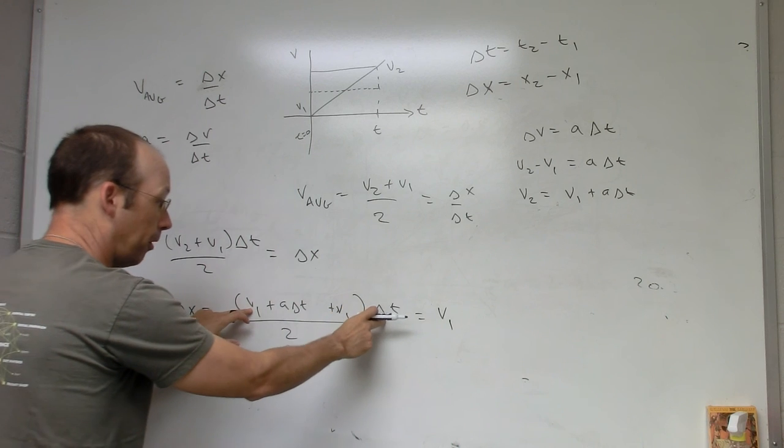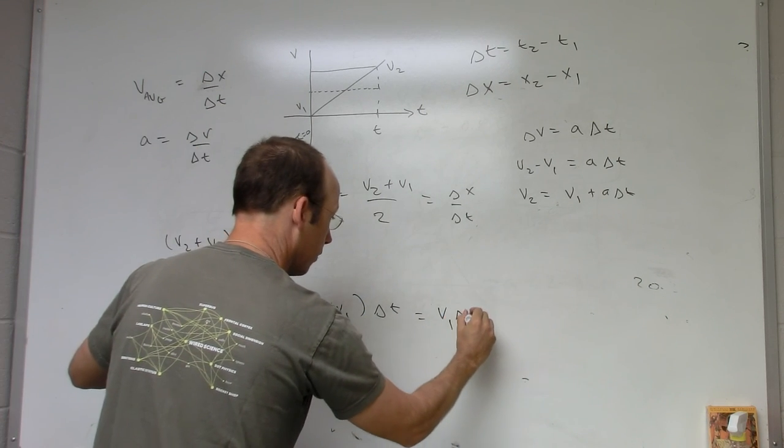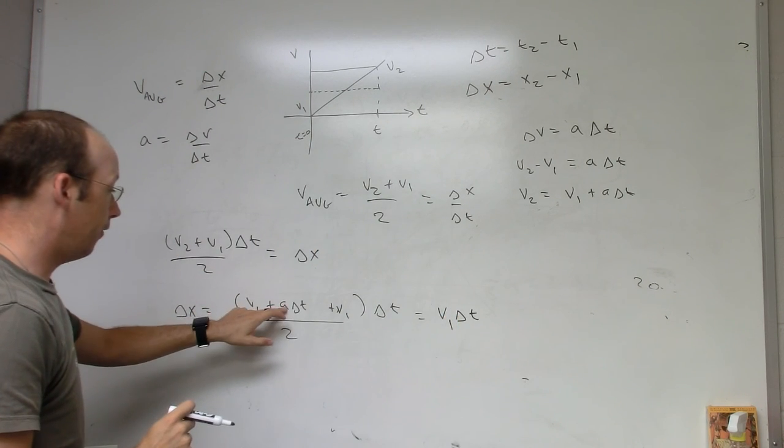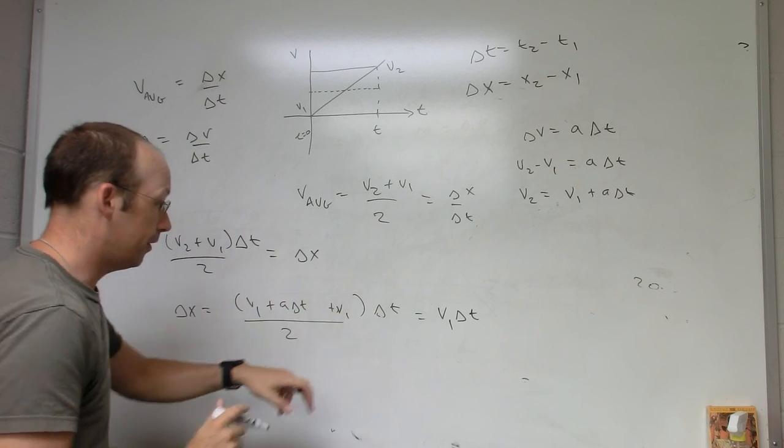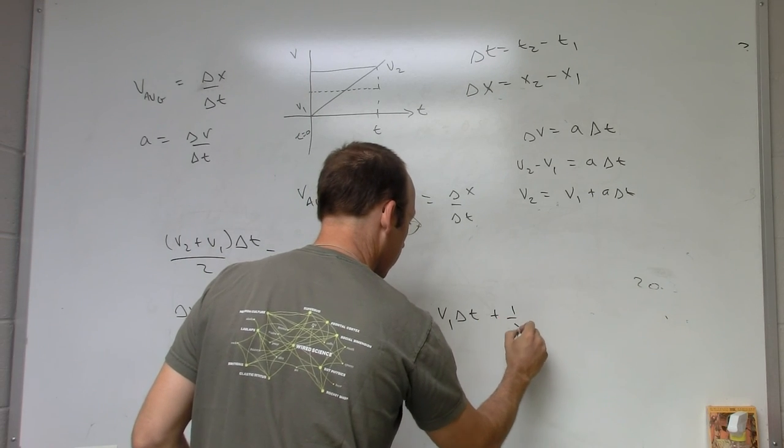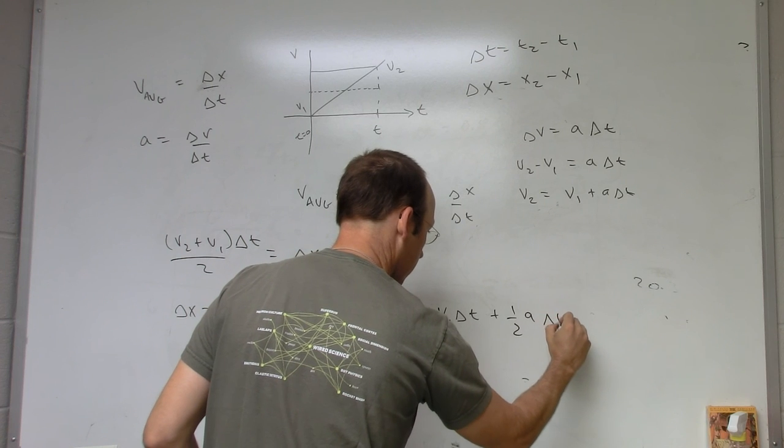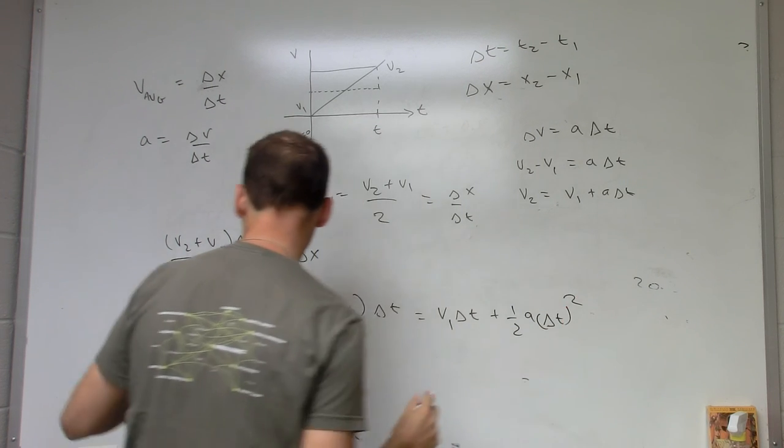Oh, and then I also multiply by delta t. And then I have the 1 half a delta t times delta t. Okay, now that's delta x.